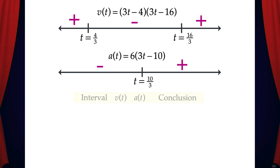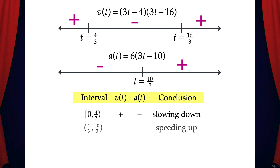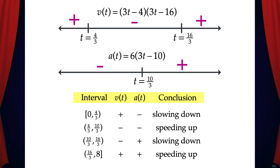Now let's make a chart to determine where the horse is speeding up or slowing down. On the interval 0 to 4/3, velocity is positive and acceleration is negative, so the horse is slowing down. From 4/3 to 10/3, both velocity and acceleration are negative, so the horse is speeding up. From 10/3 to 16/3, velocity is negative but acceleration is positive, so the horse is slowing down. From 16/3 to 8, both velocity and acceleration are positive, so the horse is speeding up.